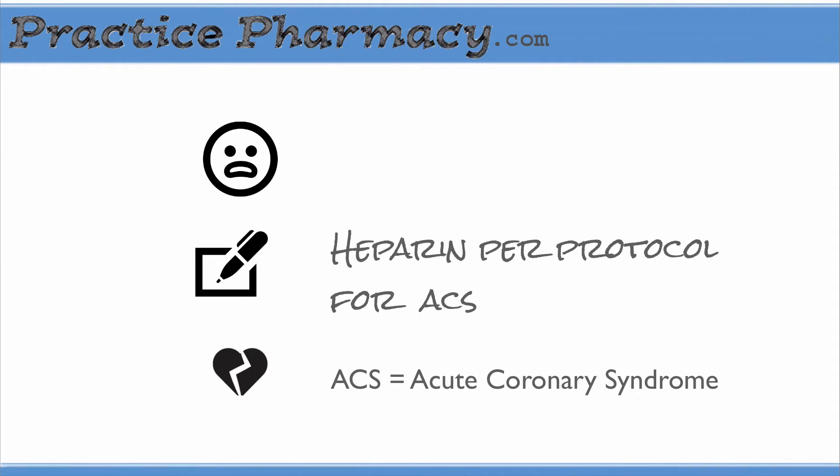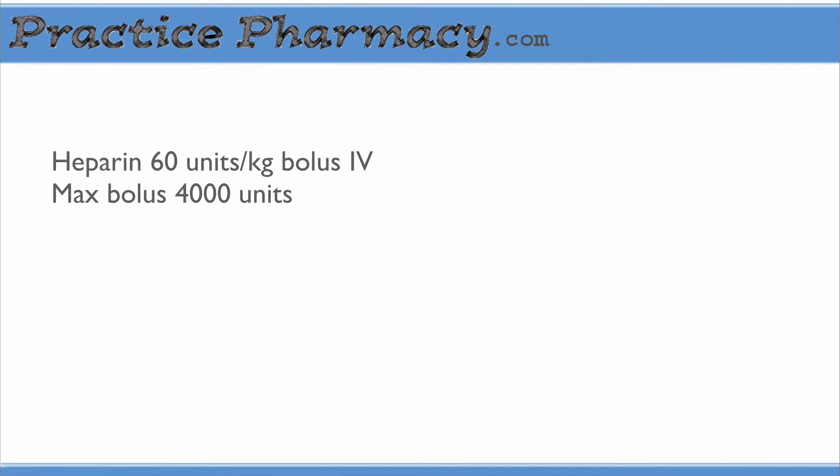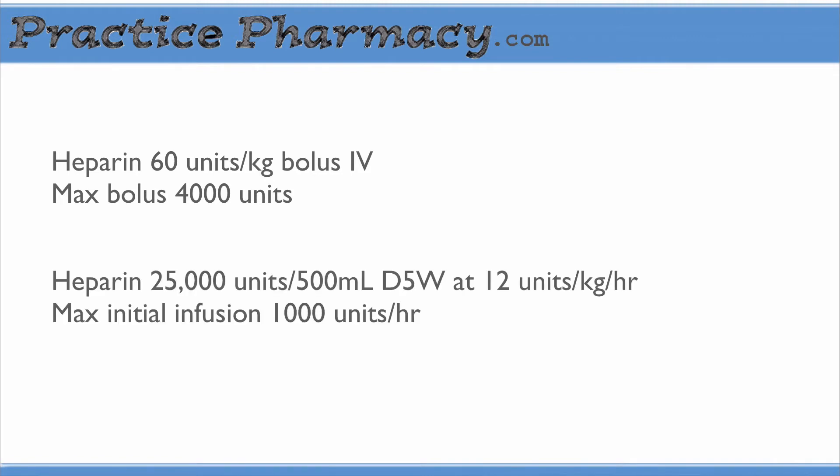The protocol order defines the dosing, and here it is: heparin 60 units per kilogram bolus IV with a maximum bolus of 4,000 units, and then heparin 25,000 units per 500 milliliters of D5W at 12 units per kilogram per hour, and the maximum initial infusion rate for that is 1,000 units per hour.